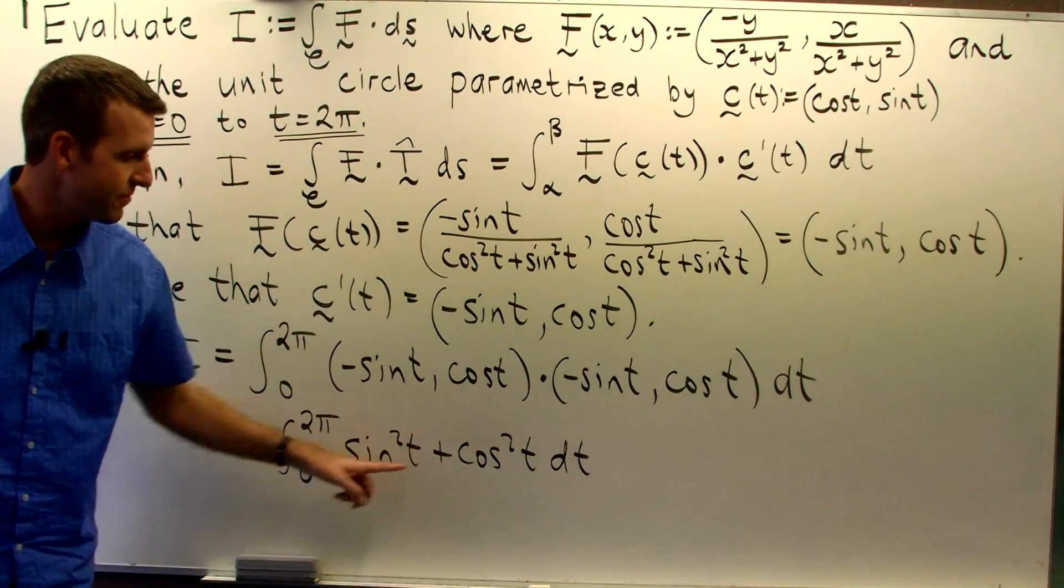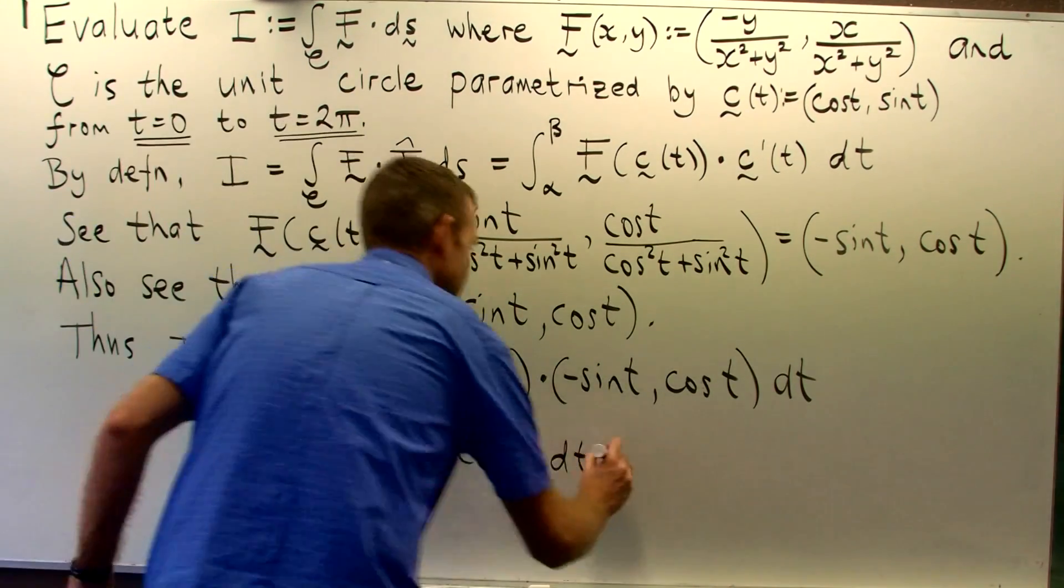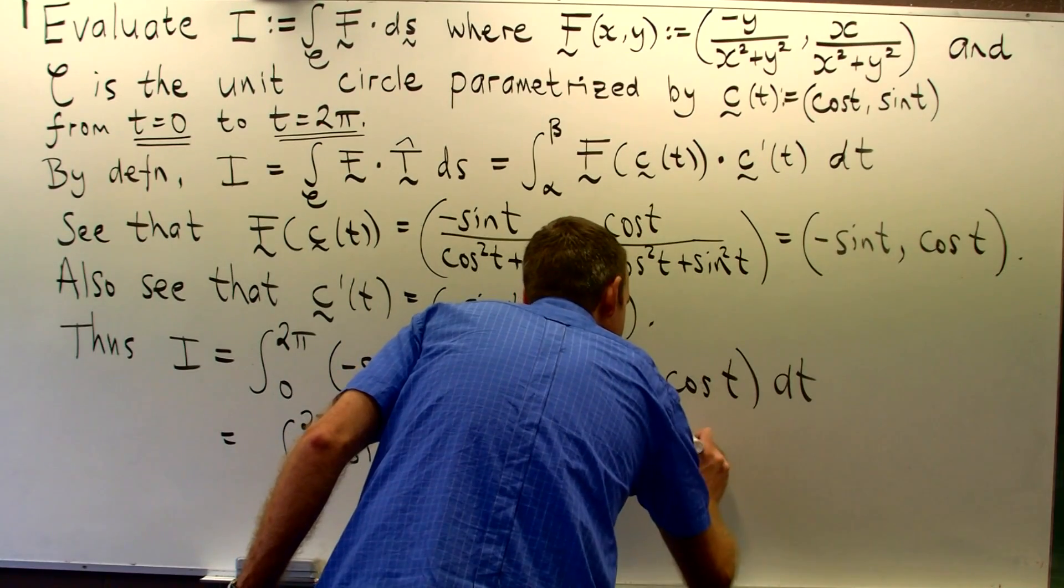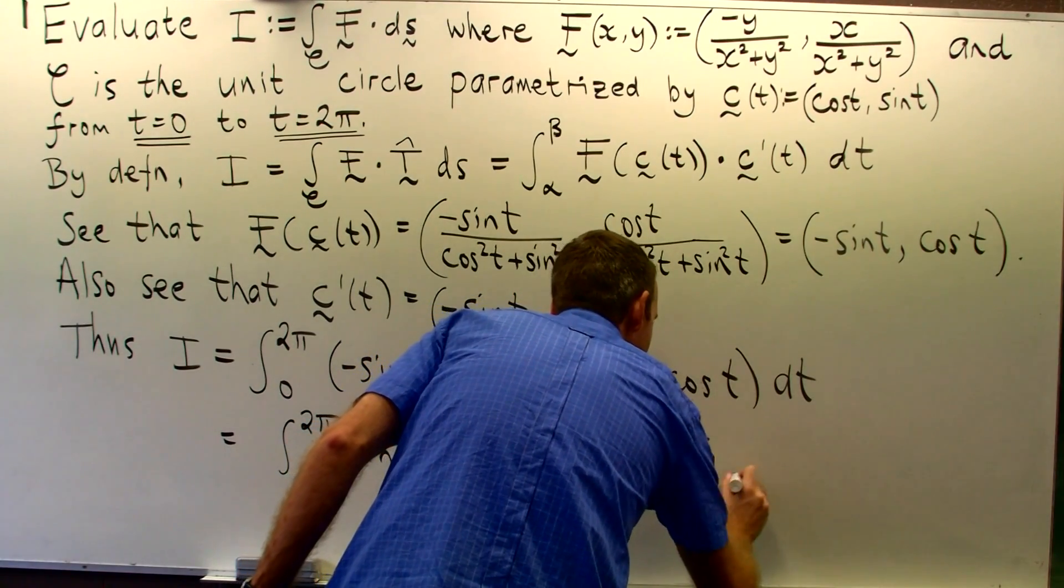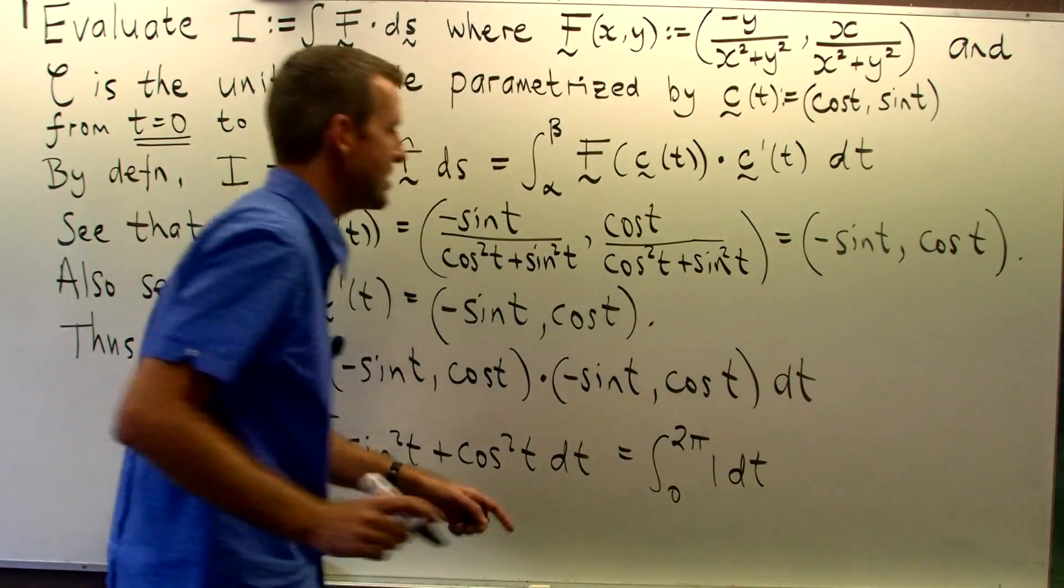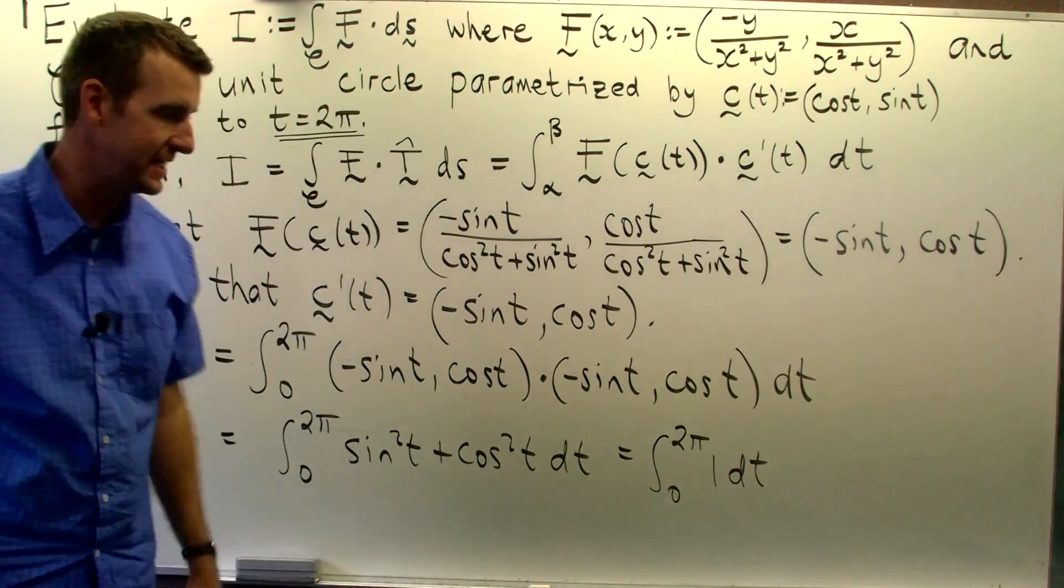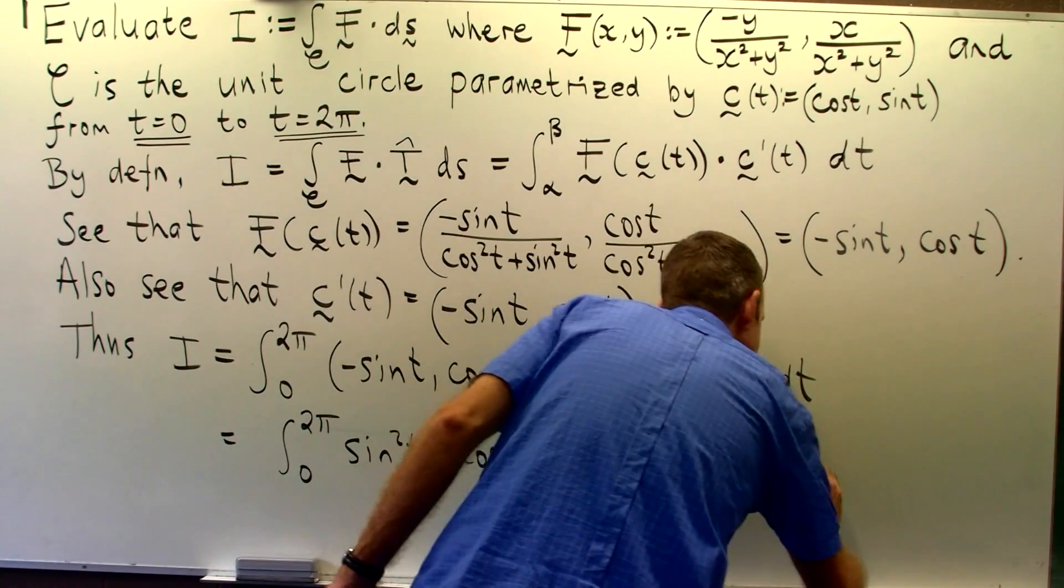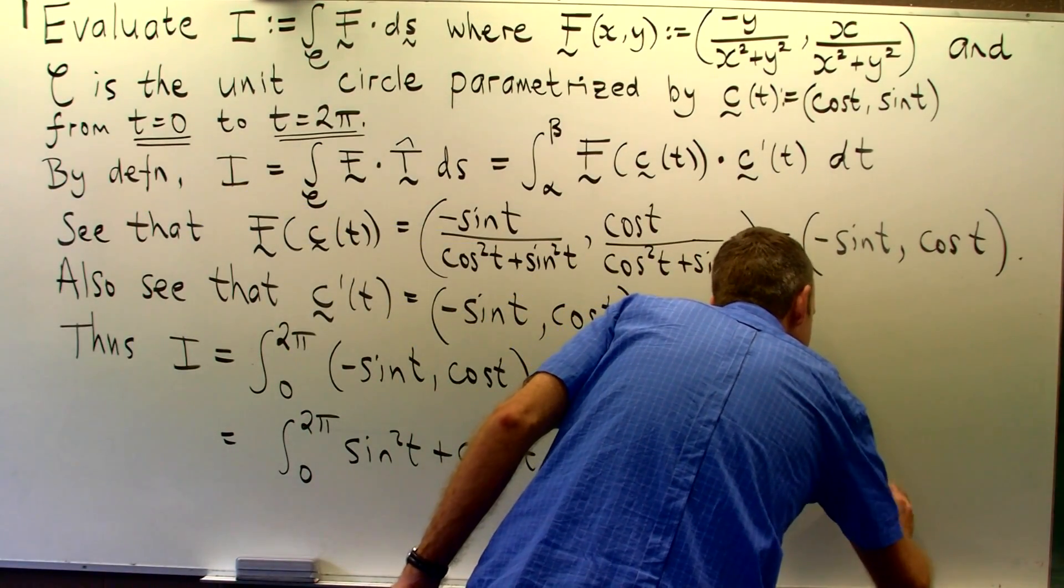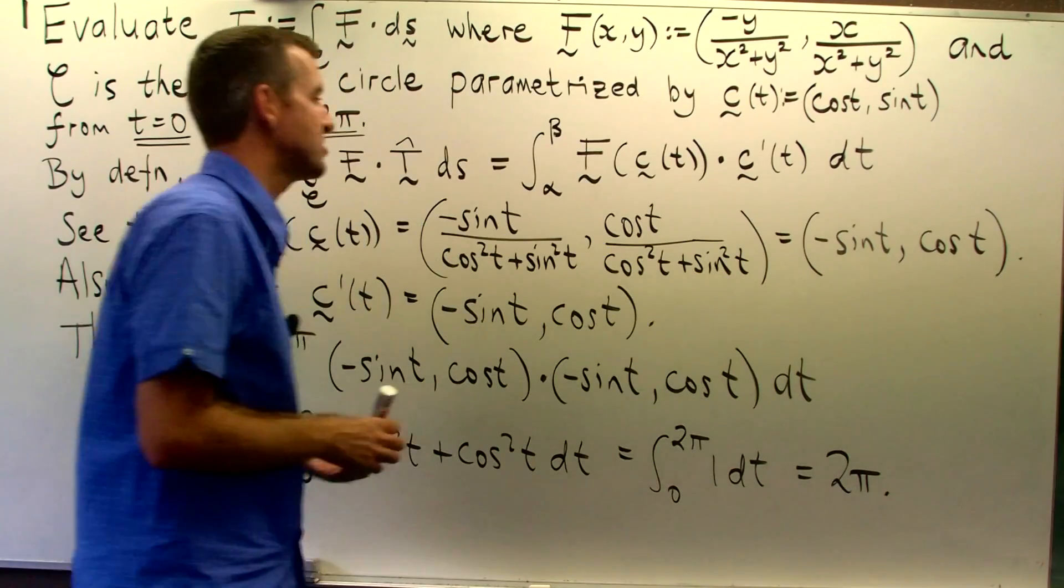So again, we have a nice simplification here and we're just integrating a constant. Now, in general, you probably won't get this kind of simplification. Usually this is a function of t here. So we can integrate that directly and we get a final answer of 2 pi.